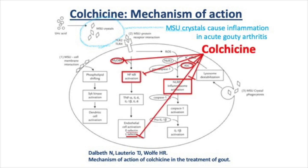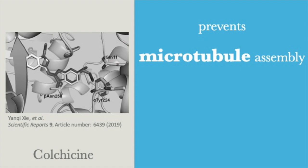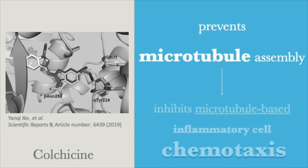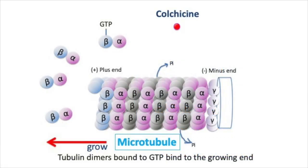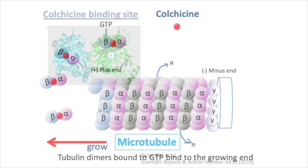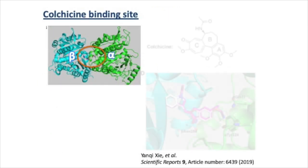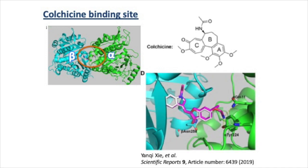Colchicine affects the molecular pathology of gouty arthritis. It prevents the formation of microtubules by binding to both alpha and beta tubulin, creating a tubulin-colchicine complex that prevents microtubule formation.